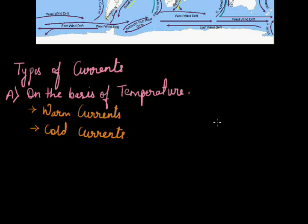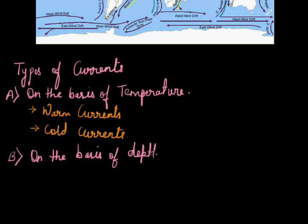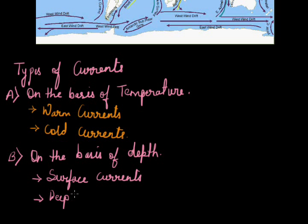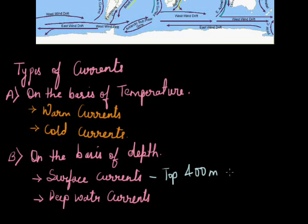The second division of ocean currents is on the basis of the depth at which they are found. They can be called surface currents and deep water currents. The surface currents are found at the upper level of water — usually only 10% of ocean water is involved in surface currents, and they are found at the top 400 meters of the ocean. Whereas the deep water currents are found below the mark of 400 meters of sea level.